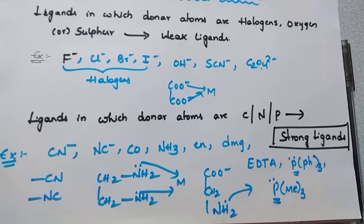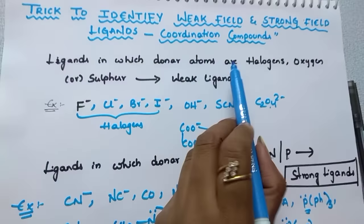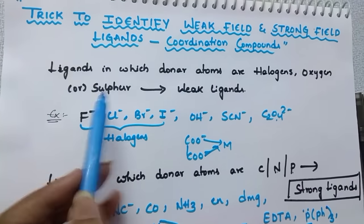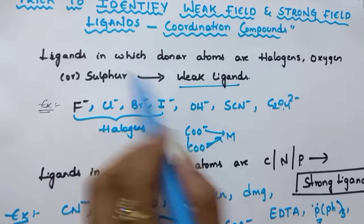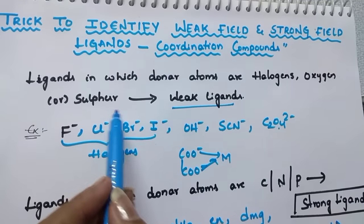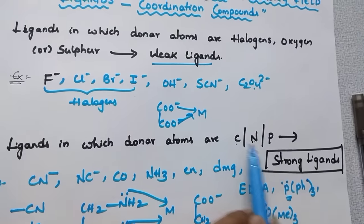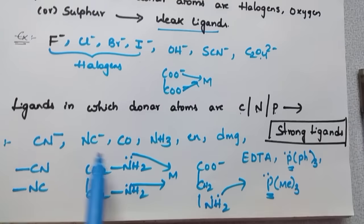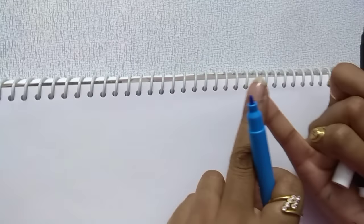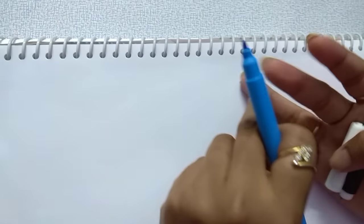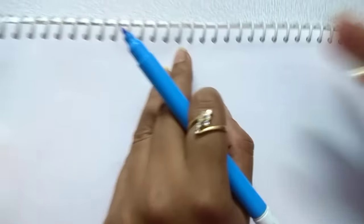Let us see the summary. Ligands in which the donor atoms are halogens, oxygen, or sulfur act as weak field ligands. Wherever the donor is halogen, oxygen, or sulfur — they are weak ligands. Whenever the donor atoms are carbon, nitrogen, or phosphorus, they are strong field ligands. This is very important because many students get confused about whether a ligand is strong or weak field. Without knowing this, you cannot do VBT or CFT questions — these are most important in coordination compounds.